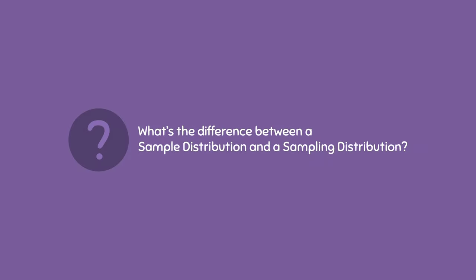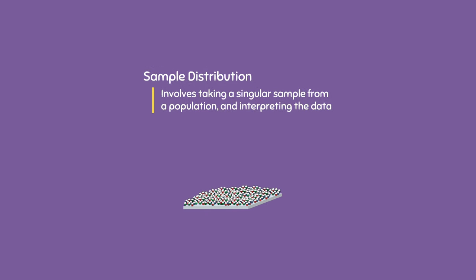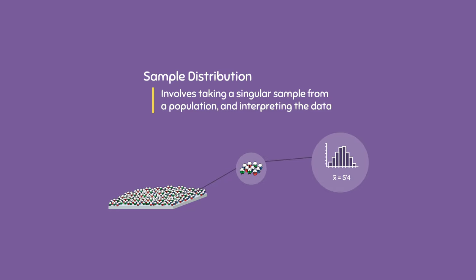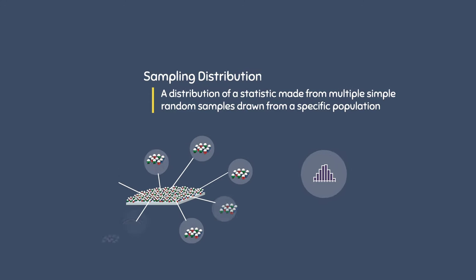So what's the difference between a sample distribution and a sampling distribution? A sample distribution involves taking a singular sample from a population and interpreting the data. On the other hand, a sampling distribution is a distribution of a statistic made from multiple simple random samples drawn from a specific population.